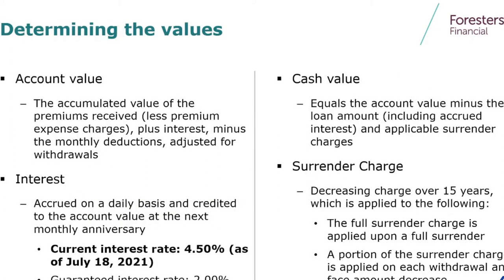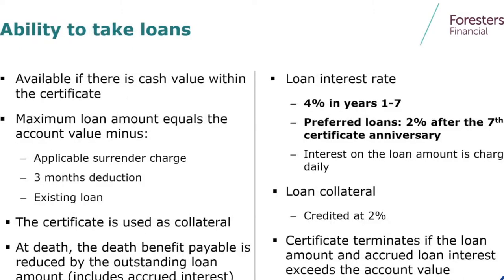The current interest rate is 4.5%. We just increased that on July 18th — it went from 4.2% to 4.5%. The product also has a 2% minimum rate guarantee. People have asked if clients can borrow from this. Yes — there's a 4% loan rate in years 1 through 7, and then preferred loans at 2.7% in year 7 and beyond. Great opportunity to get coverage, accumulate cash, and should somebody need to take a loan out of this product, it's there for them.